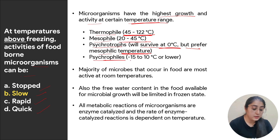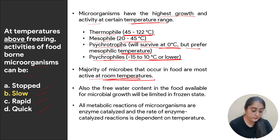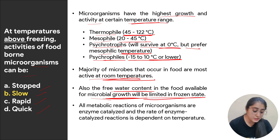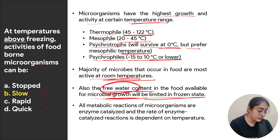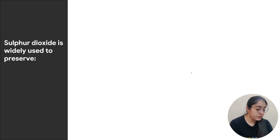Psychrophiles are more suitable for growth at minus 15 to 10 degrees Celsius or lower. The majority of microbes in food are more active at room temperatures. The free water content available in food decides microbial growth, and it is limited in the frozen state. By decreasing free water content we can slow microorganism growth. Therefore at temperatures below freezing, growth and metabolism is slowed down, so the correct option is slow.